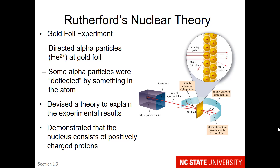Here is the synopsis of the development of Rutherford's nuclear theory. This came from something called the Gold Foil Experiment, where he was directing helium 2+ particles, which are alpha particles, at gold foil. His expectation was that he would determine the structure of the atom in the gold foil by determining the deflection of the particles.